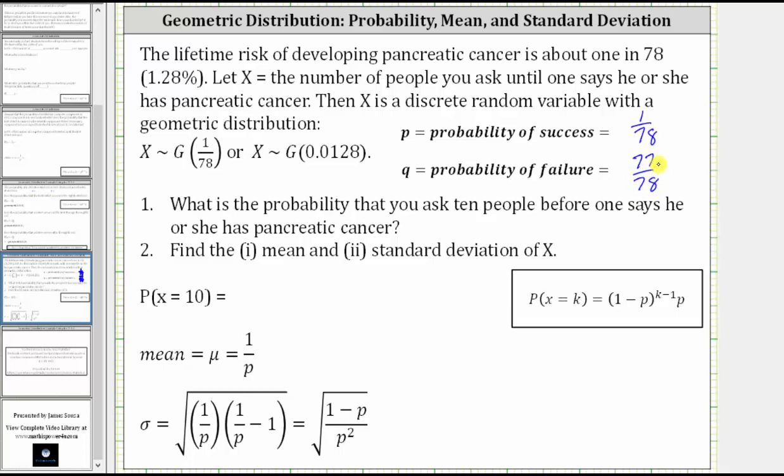Number one, what is the probability that you ask 10 people before one says he or she has pancreatic cancer? This is equal to the probability X equals 10, which is equal to the probability of failure, or the probability someone doesn't have pancreatic cancer, raised to the power of nine, because the first nine people don't have pancreatic cancer.